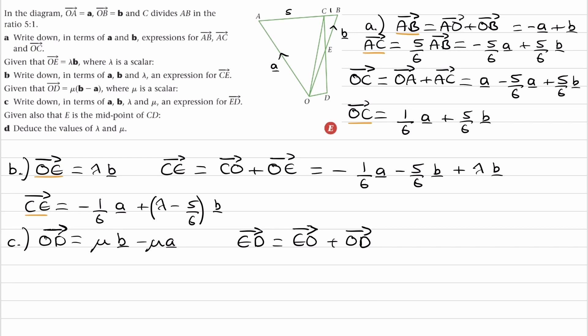EO is just the negative of what we have here. It's just minus lambda b. And then we add on OD, and we will end up with something that involves mu, lambda, a and b. So EO is minus lambda b. OD is mu b minus mu a. And this will then be minus mu a plus, so I'll factorize these two, I'll take out the b, and we're left with mu minus lambda times b.